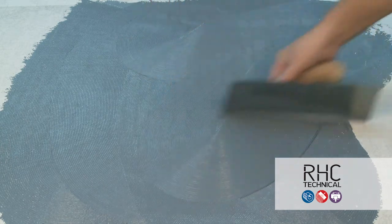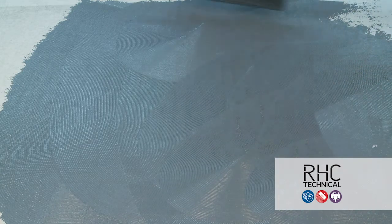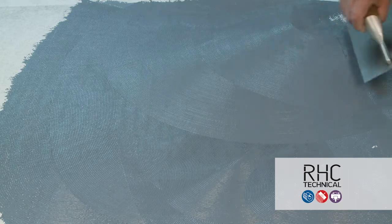Over porous substrates only, apply the adhesive with a 1/16 x 1/16 x 1/16 inch V-notch trowel, sometimes referred to as a flat V.